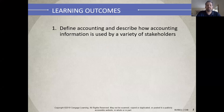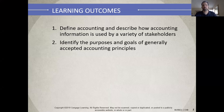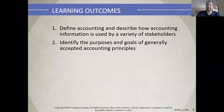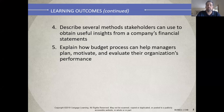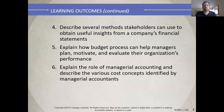Our learning outcomes: we want to describe how accounting information is used by a variety of stakeholders. We identify the purposes and goals of generally accepted accounting principles, also known as GAAP. We want to look at the key elements of the major financial statements, describe methods stakeholders can use to obtain useful insights from financial statements, explain how the budget process can help managers plan, motivate, and evaluate performance, and look at the role of managerial accounting and the various cost concepts.